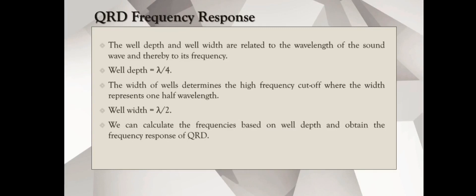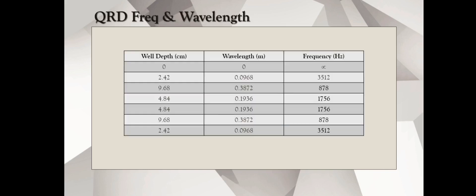The QRD has a frequency response. The well depth and well width are related to the wavelength of sound. Well depth is equal to lambda over 4 and well width is equal to lambda over 2. The well width also determines the high frequency cutoff. We can calculate the frequencies based on the well depth and obtain the frequency response of QRD. I've computed here, based on the well depth and the relationship between the well depth and wavelength, I've computed the wavelength, and then, based on the relationship between speed of sound, frequency, and wavelength, I calculated the frequency. If you observe here, the deepest well, that is 9.68 cm, is diffusing a frequency of 878 Hz, whereas the shallowest well, for practical purposes, is diffusing a frequency of 3512 Hz. For practical purposes, we can say that this diffuser has a frequency response from 878 Hz to 3512 Hz.